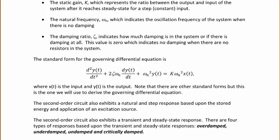The second-order circuit also exhibits a natural and a step response based upon the stored energy and the application or removal of an excitation source. It also exhibits a transient and a steady-state response. There are four types of responses: over-damped, under-damped, undamped, and critically damped.